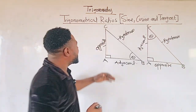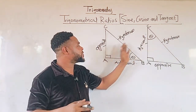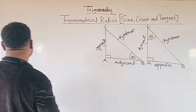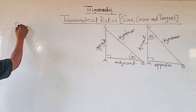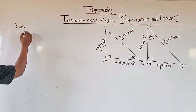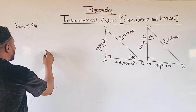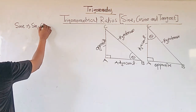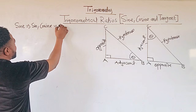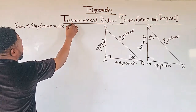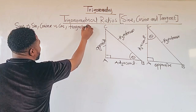Now that we have learned how to label the parts of the right angle triangle, let us look at the ratios. With our ratios, we have sine — and normally in calculation we shorten it to sin. We also have cosine, and in our calculations we shorten it to cos. And we have tangent, and in our calculation we shorten it to tan.